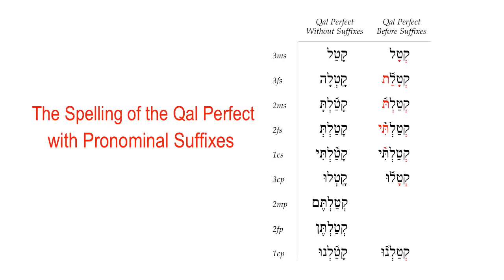In most instances, the spelling changes are just related to the vowels. For example, in the 3MS form, you'll see that the qamets-patach vowel pattern has shifted to shewa-qamets before the pronominal suffix. That same spelling change also occurs in the 3CP, and in the 1CP the qamets has simply changed to shewa. Those aren't major changes.